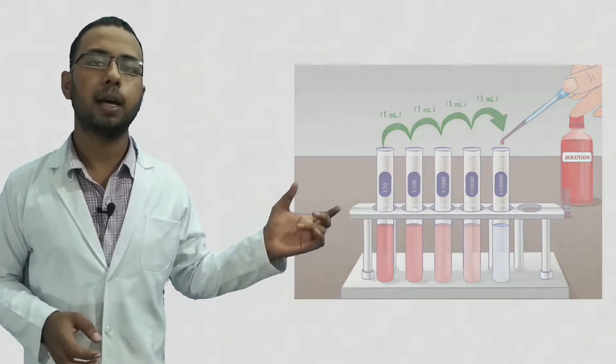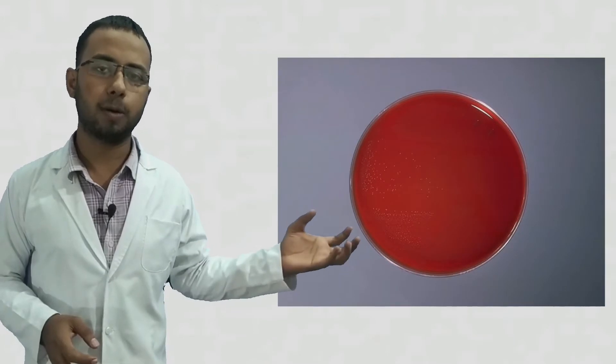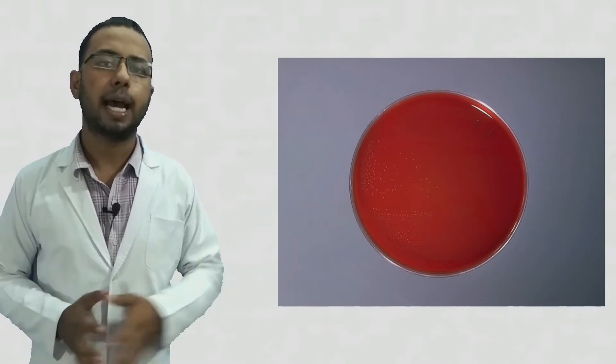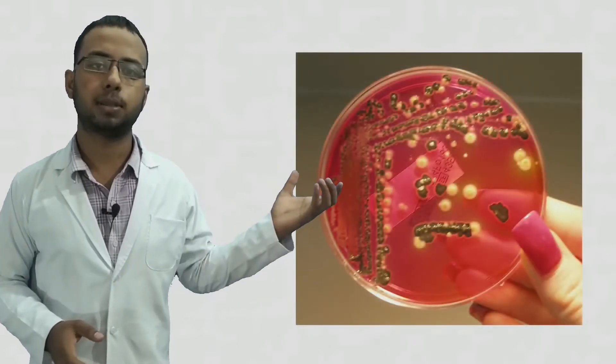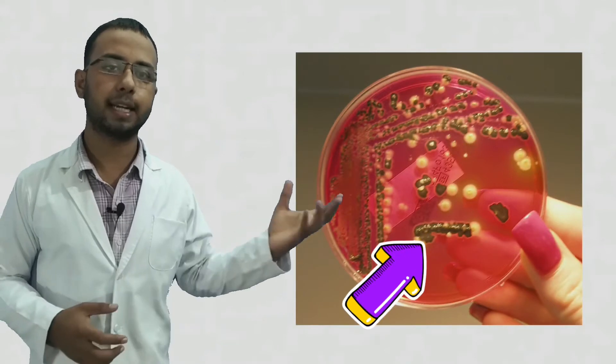And cultivating on an agar plate which is suitable for Salmonella. The culture is spread or streaked on that agar plate, and after 24 to 48 hours, if the growth comes, it is surely said that this person is infected with Salmonella typhi and is a patient of typhoid.